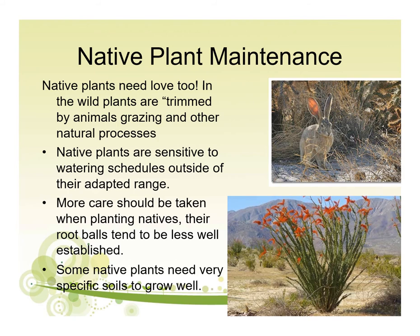Some native species need very specific soils to grow well. Manzanita, or Arctostaphylos, particularly those adapted to the central coast, look for a specialty soil called serpentine soil. Desert species need a very well-draining, gravelly, rocky soil. Our garden tried to grow Ocotillo for years — they built a big slope and imported decomposed granite, but it was a real struggle to grow those very arid climate native plants.